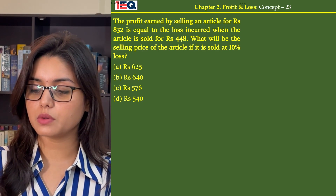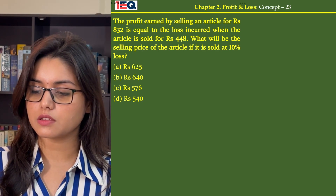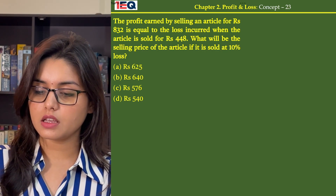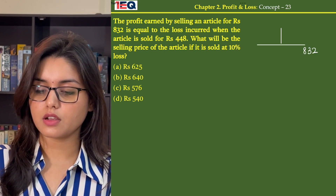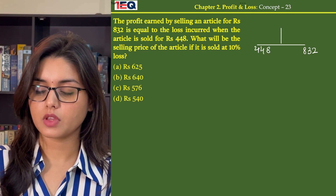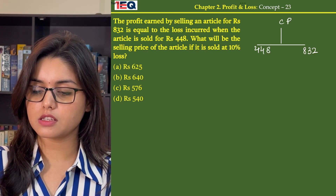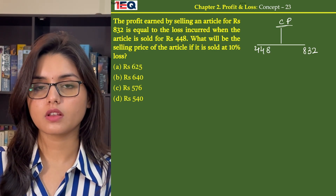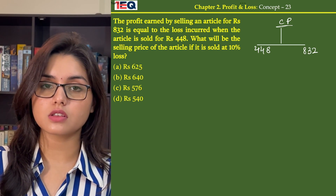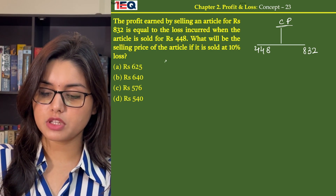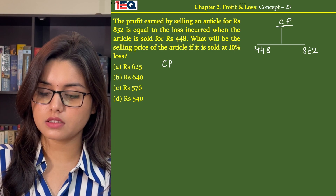In the given question, we know that an article is sold at Rs. 832 and Rs. 448, and we need to find the cost price. Since the profit earned and the loss incurred are equal, we can get the cost price directly from this.